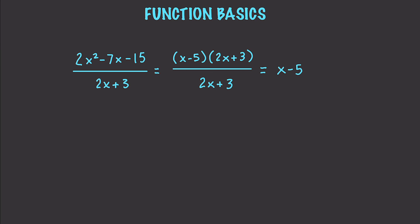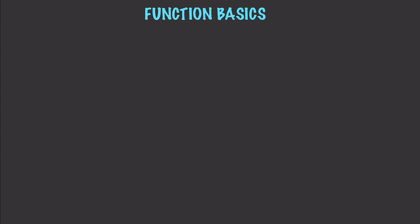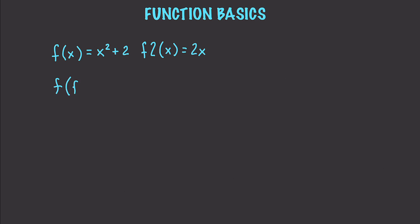A lot of what we've talked about previously regarding multiplying and dividing polynomials applies here as well. You also have something called composition of functions, which is simply putting one function inside of another. So let's say we have f(x) = x squared plus 2, and f2(x) = 2x. The composition f of f2(x) would work out to be 4x squared plus 2.